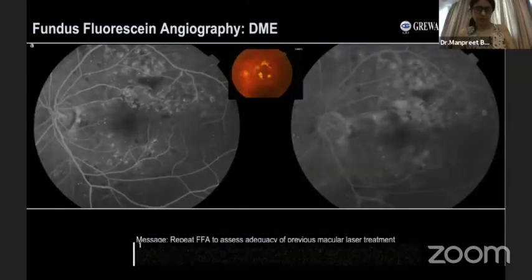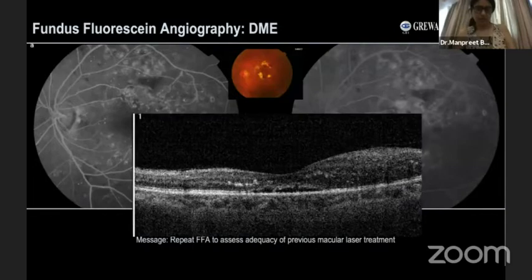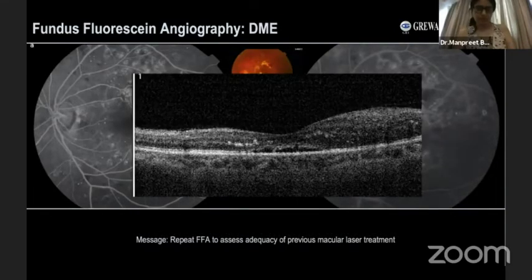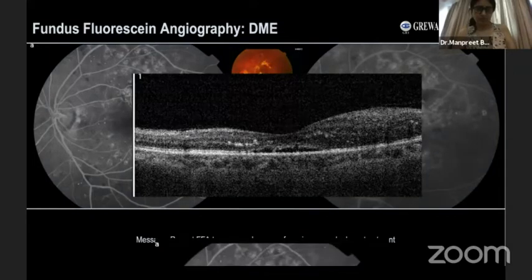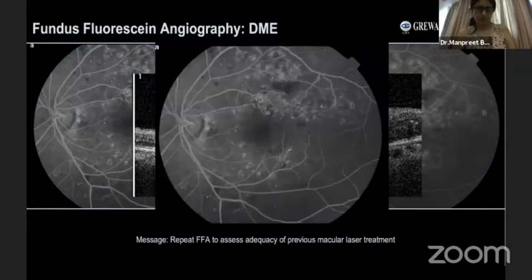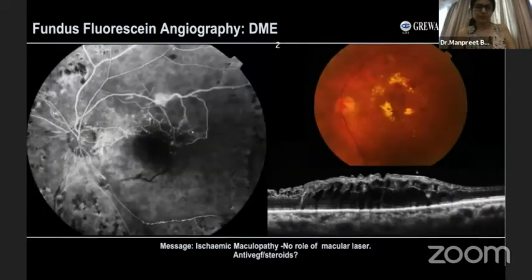In situation two, a diabetic previously treated with macular laser — the laser spots are visible on the superotemporal part of the macula. The DME is identified on OCT scan, but once you run angiography you know the real source — which microaneurysms were not previously lasered. In another case, a diabetic macular edema with gross DME on OCT: until you run angiography, you won't realize you are dealing with an ischemic maculopathy.